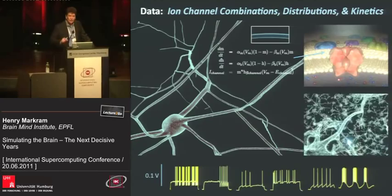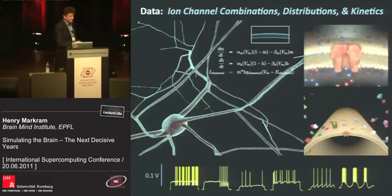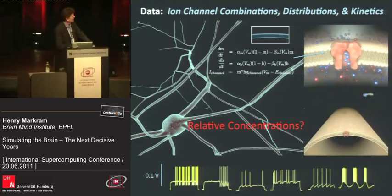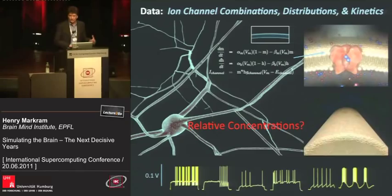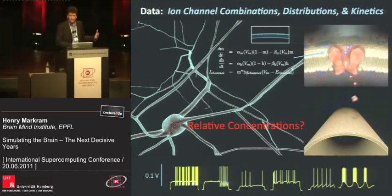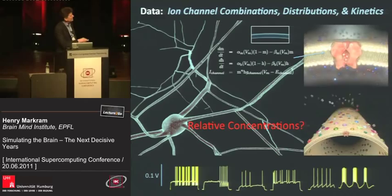The next challenge is that you need to know the relative concentrations, and this is a much more difficult data set to get. What we discovered is that we can now collapse the fitting — we run a genetic algorithm that looks for the relative color combinations, and when it finds the right combination of types of channels or colors, it matches these behaviors. We can capture all these different behaviors automatically.